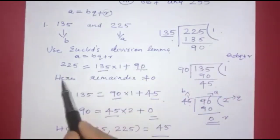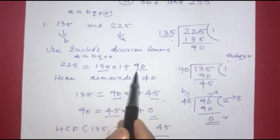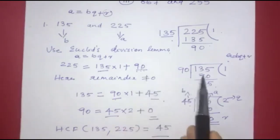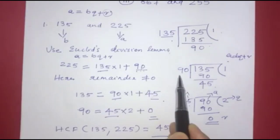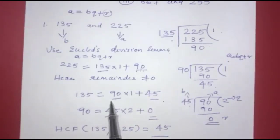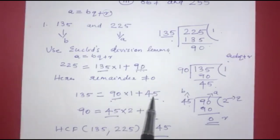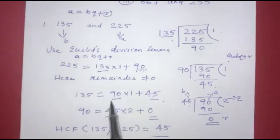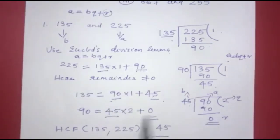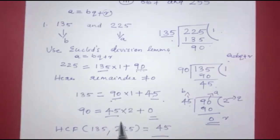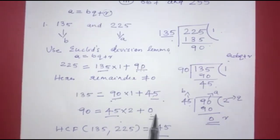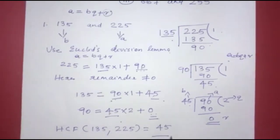We get 225 is equal to 135 into 1 plus 90. Then 135 is equal to 90 into 1 plus 45. Then 90 is equal to 45 into 2 plus 0. When the remainder is 0, B is the HCF. So the HCF of 135 and 225 is 45.